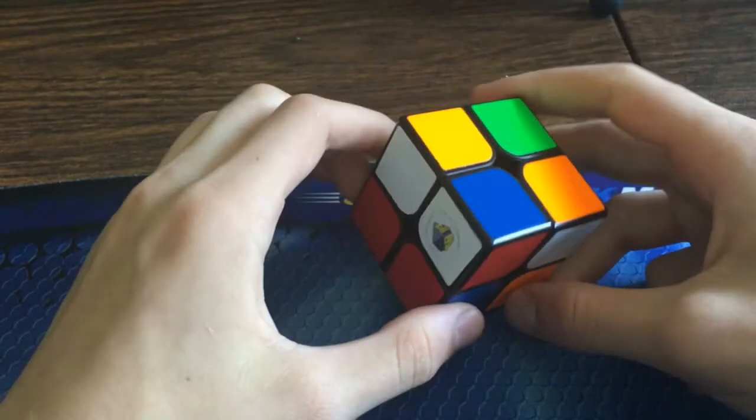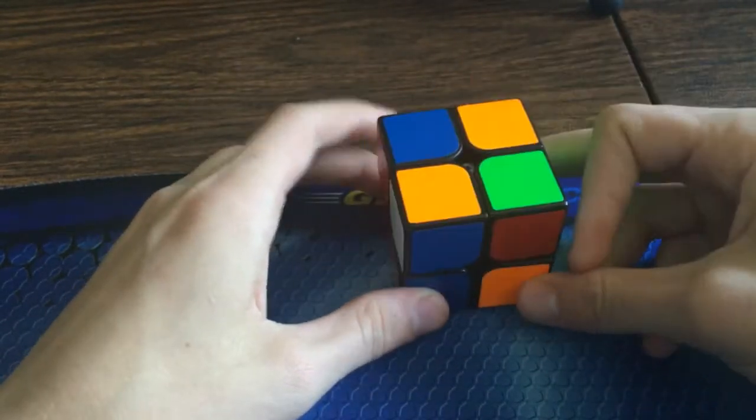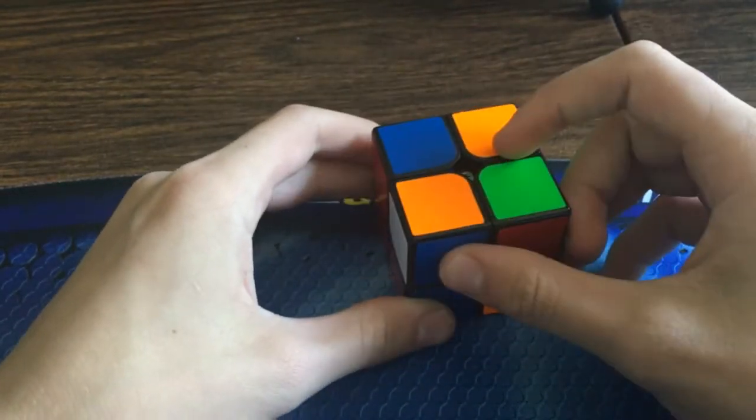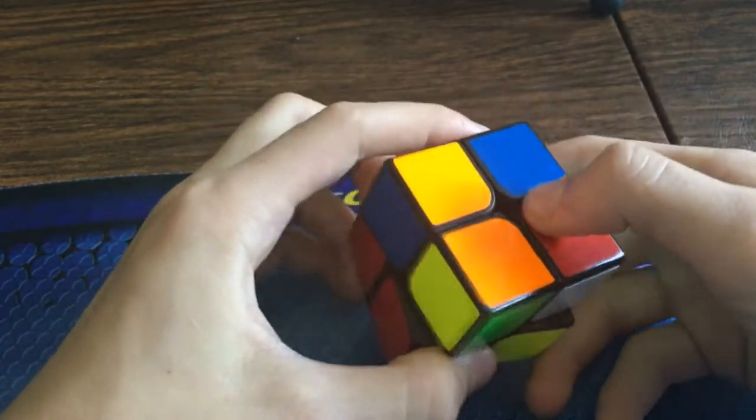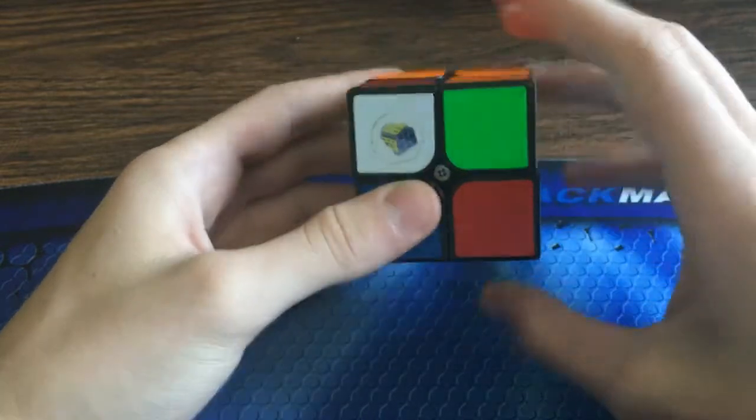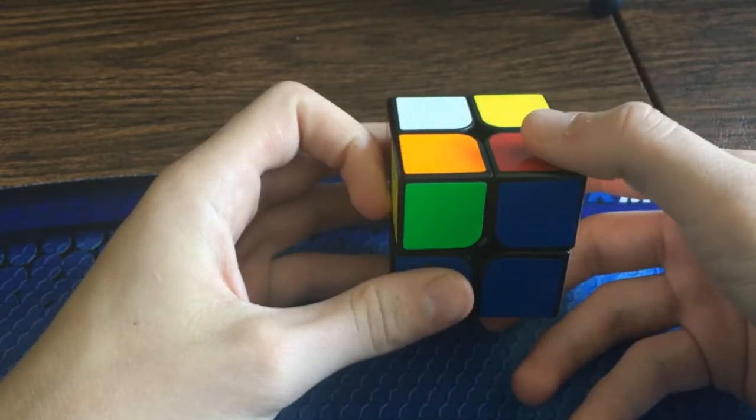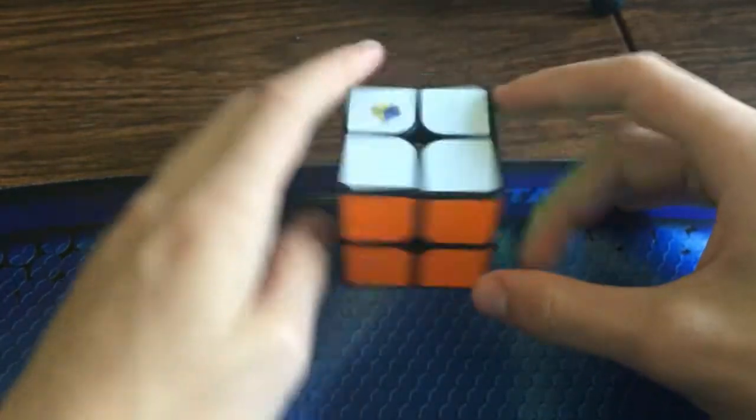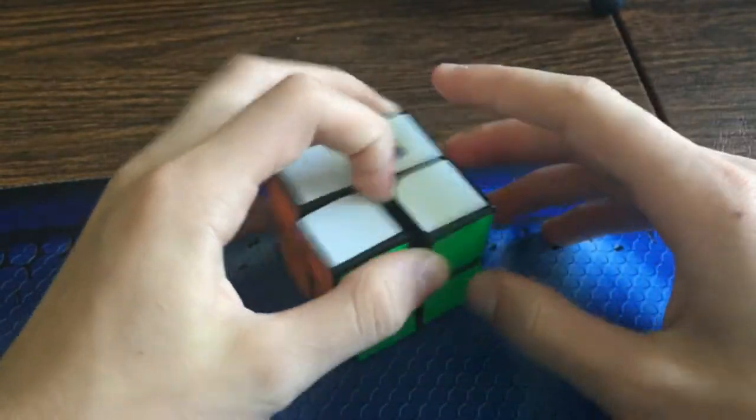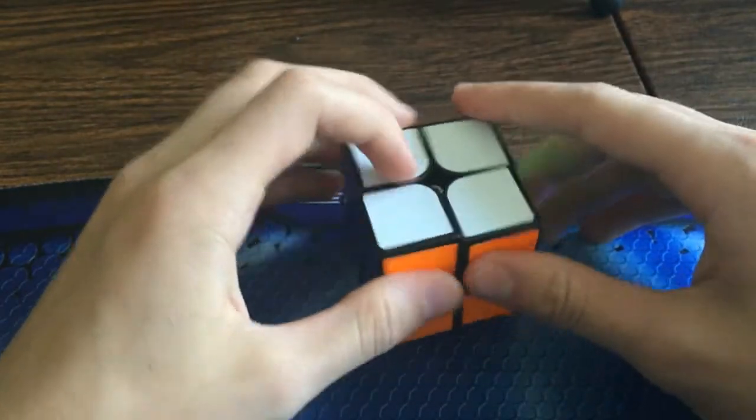So with the last pi case here, start with the same setup for this, but then you do R U R' U' R2 F R2 F'. So that one's a little bit slower than the last one, but it's still quite useful in solves.